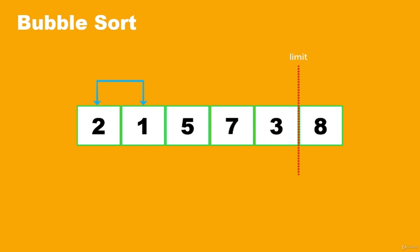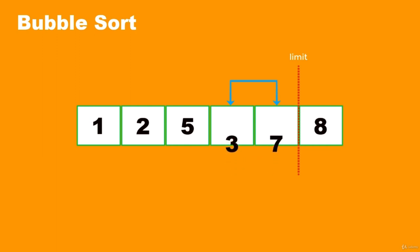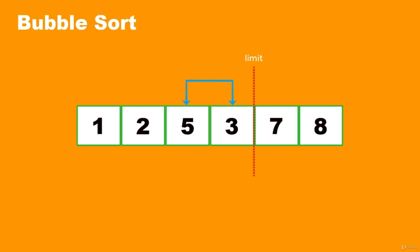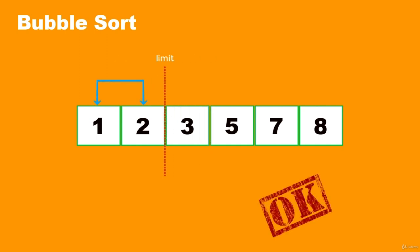We compare 2 and 1, swap. Then 2 and 5 — fine. Then 5 and 7 — fine. Then 7 and 3 — swap. We've reached our limit line. We repeat the sorting and place the red line before the second-to-last number. We compare 1 and 2, then 2 and 5, then 5 and 3 — swap. We move the red line one number closer. These are both okay, then one last run: compare 1 and 2 — no swap needed. Now we can say our list has been sorted. Now that we understand how bubble sort works, let's use a Python program for it.